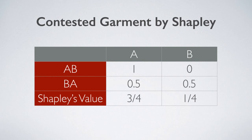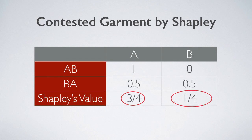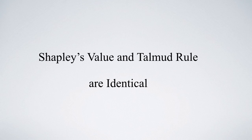The average of 1 and 0.5 is 3.25, and that of 0 and 0.5 is 1.25. Hence, the Shapley value and the Talmud rule are identical in the two-person case.